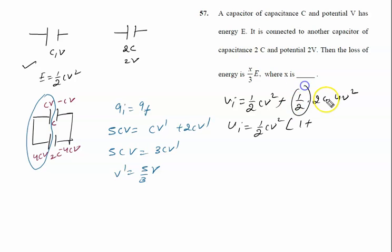U initial is given by half CV square, 1 plus half CV square common for 2 to 8. 8, 1, 9. So 9 by 2 CV square.